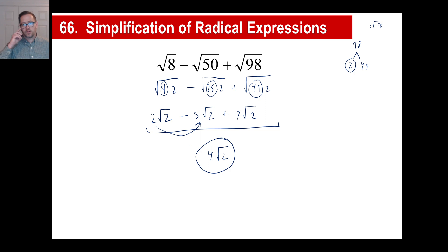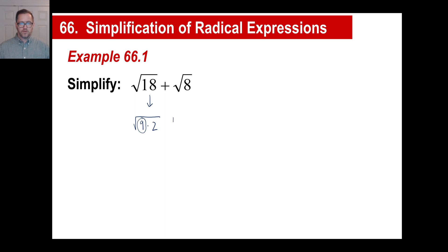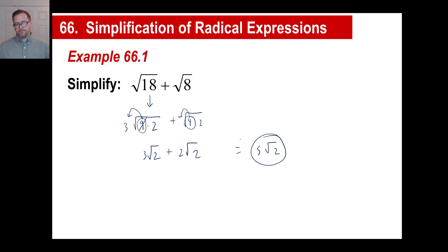That's how you simplify radical expressions. Let's do one: square root of 18 plus the square root of 8. You probably recognize right away this is going to be 9 times 2, and that's the square you can work with. And 8 will be 4 times 2. The square root of 9 comes out as 3, so 3 times the square root of 2, plus 2 square root of 2, which gives you 5 square root of 2.